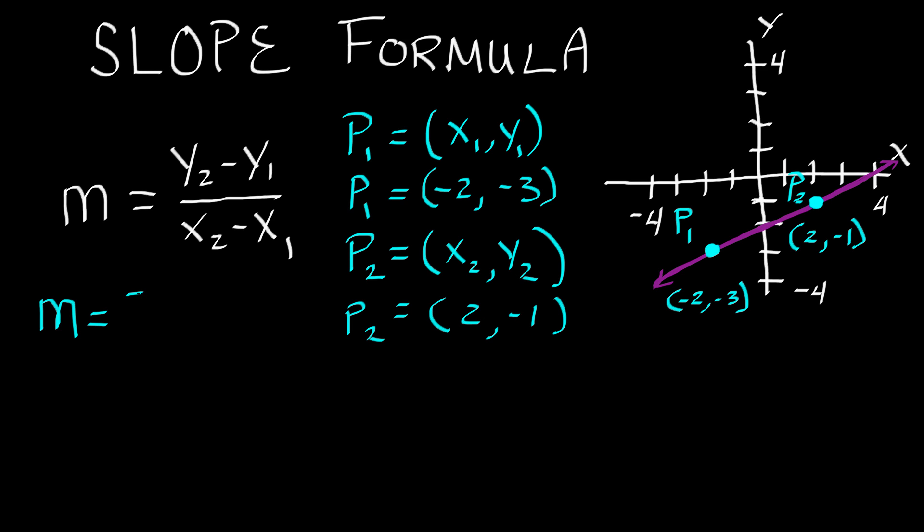So we put negative 1 for y2 and then we're subtracting y1. So y1, we go up here to point 1 and the y1 component corresponds to the negative 3 in p1. So we're subtracting a negative 3 and then we're dividing that by x2 minus x1. So x2 comes from point 2 and x2 represents this 2 right here. So we'll put 2 for x2 and then we subtract x1. x1 is up here with point 1 and x1 corresponds to the negative 2. So we're subtracting a negative 2.